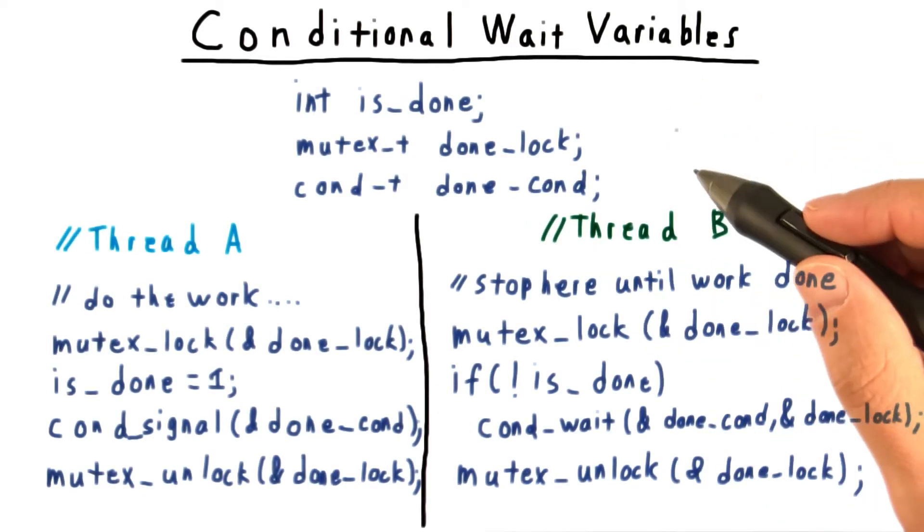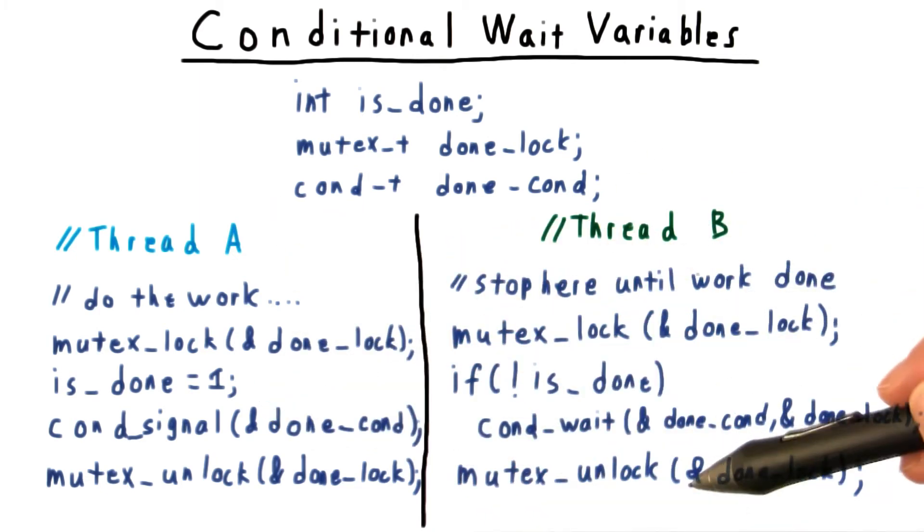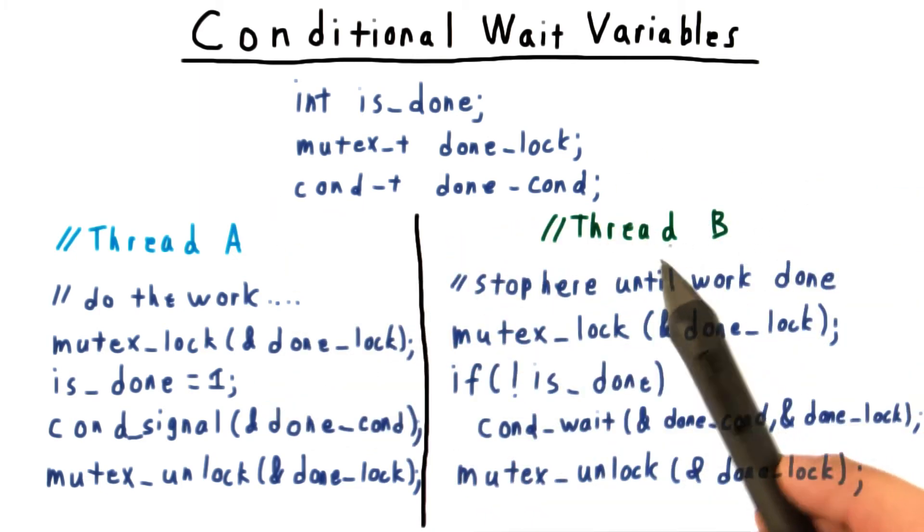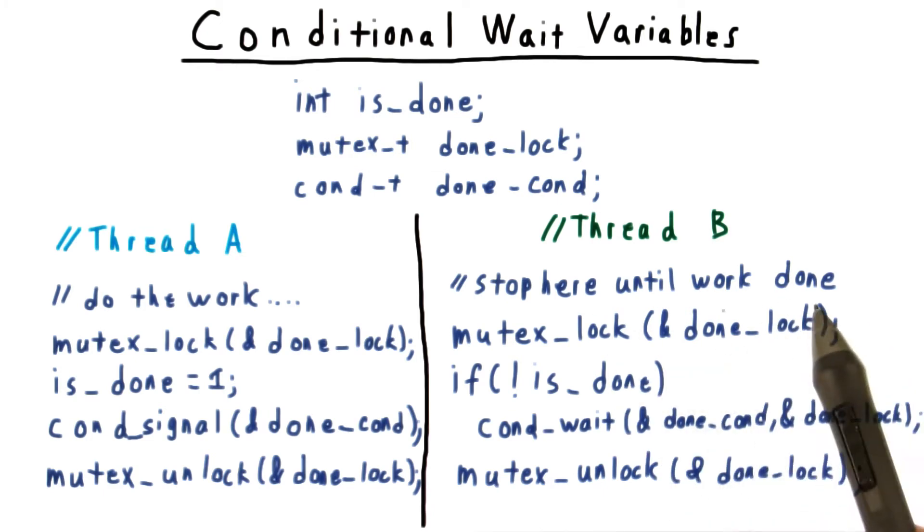To give an example, let's suppose that we have a thread A over here and a thread B over here. Thread B wants to stop until thread A's work is done.